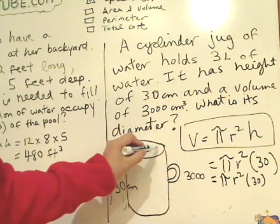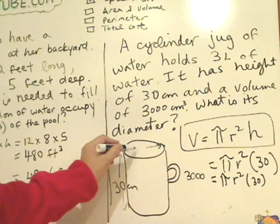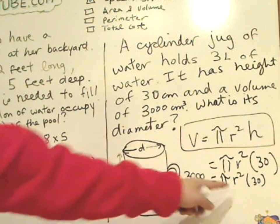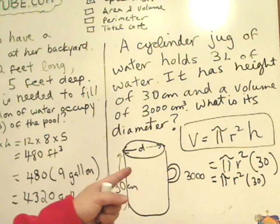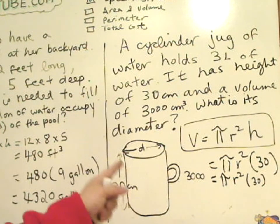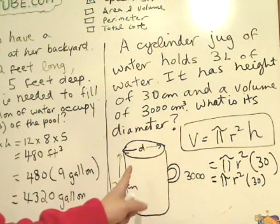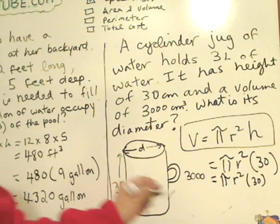See, what we want to know, what they want to ask you is the diameter, d, across there. But the volume won't give us a radius. But remember, 2 radius equal to diameter. So if we can figure out what the radius is, we can figure out the diameter. So let's solve that.